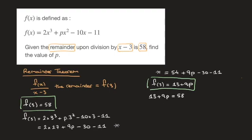Now solving for p, we subtract 13 from both sides of this equation, which leads to 9p equals 58 minus 13, which is 45.